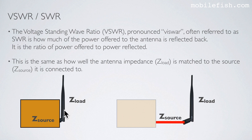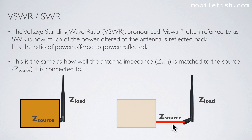In this picture the antenna impedance is indicated by Z-load and the cable impedance is indicated by Z-source.